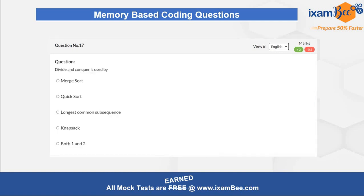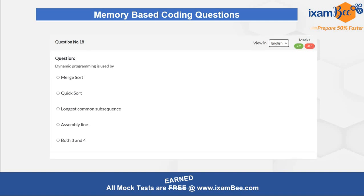The seventeenth question is related to divide and conquer, and you have to choose which of the following algorithms use this approach. The eighteenth question is about dynamic programming, where you have to choose which option best describes dynamic programming.